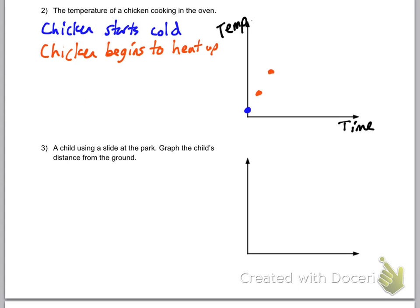Next, the chicken begins to heat up because once you put it in the oven, it's going to get hotter and hotter. So it's actually going to heat up pretty quickly at first. So I'm going to make the points go up as time goes on to the right.